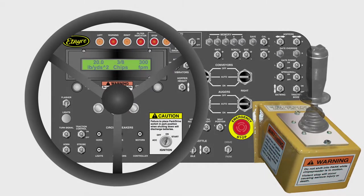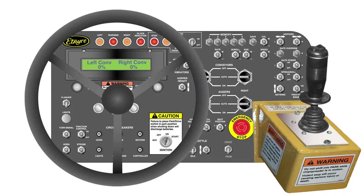To move to the next screen, press the scroll switch down. This screen shows how fast the conveyors are moving. The speed of the conveyors can be varied independently to provide a uniform distribution of material to the front hopper. With the percentage set to 99%, the conveyor will run at its highest speed; with the percentage set to 10%, it will run at its slowest speed.